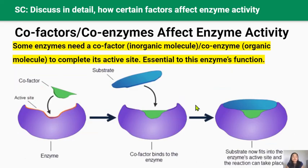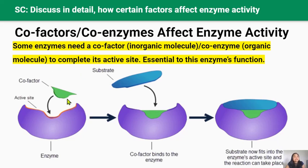Some enzymes can't catalyze reactions by themselves — they need the help of other molecules called cofactors and coenzymes. Cofactors and coenzymes bind to an enzyme's active site and alter the active site's shape in a way that allows the substrate to tightly bind with the enzyme. This change in shape is beneficial and does not cause denaturation. Without cofactors and coenzymes, the enzyme and substrate won't fit together and the reaction won't take place. The difference between them is that cofactors are inorganic molecules — like magnesium ions, copper ions, and other molecules that don't contain carbon — whereas coenzymes are organic molecules containing carbon, like vitamins and heme in hemoglobin.